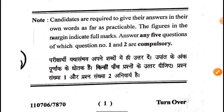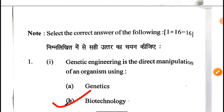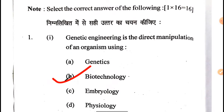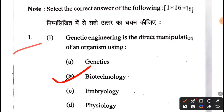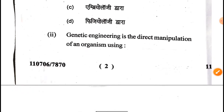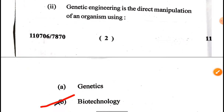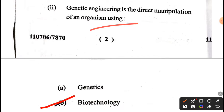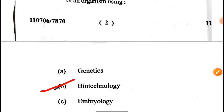This is the same instruction we have been saying for the last two to three years. The first question was the objective questions, and notably this question was repeated twice in the paper: 'Genetic engineering is the direct manipulation of an organism using the biotechnology process.' This same question also appeared again in question number two, so we can get extra marks for this question.